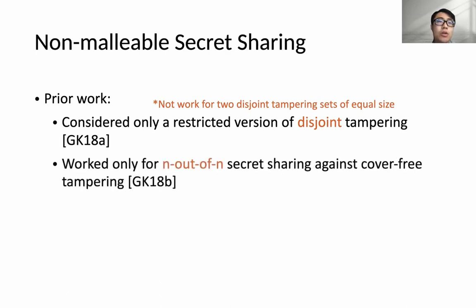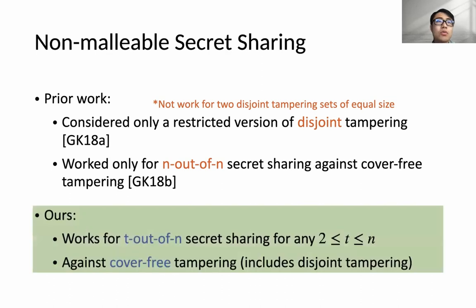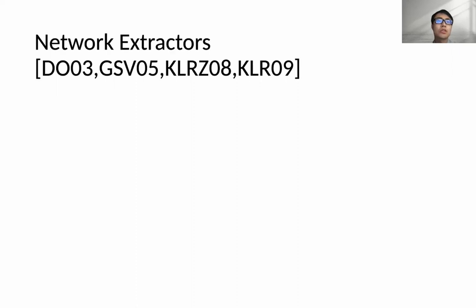In the follow-up prior work, though they can protect against cover-free tampering, their construction only works for n-out-of-n secret sharing. In this work, we give a construction of t-out-of-n non-malleable secret sharing for any t between 2 and n. We also show that our multi-source non-malleable extractor can be used to construct network extractors that improve over previous results.